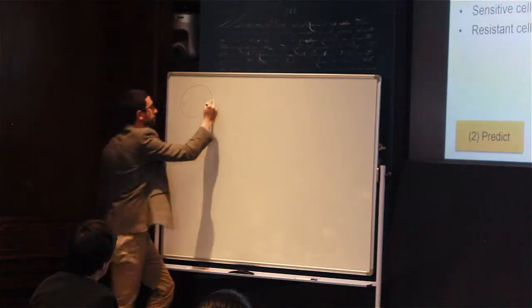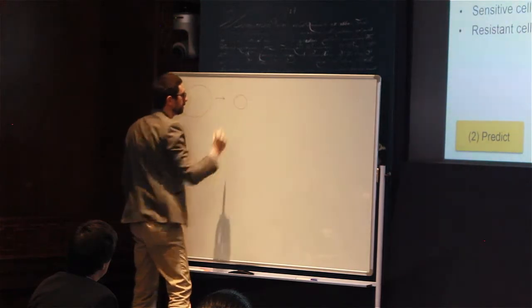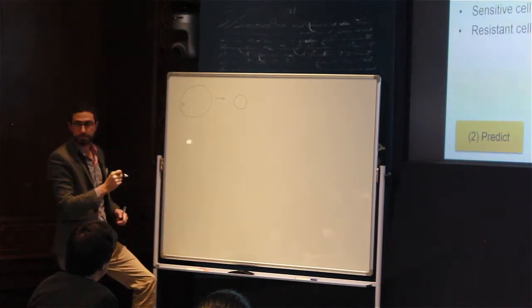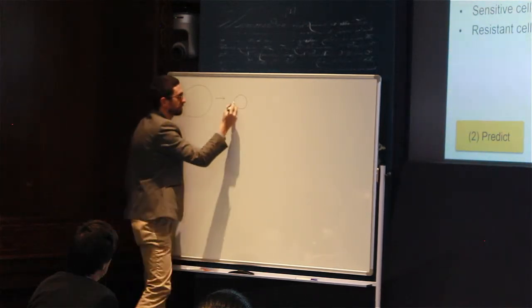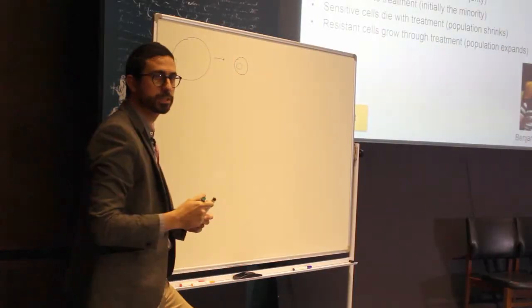As treatment goes along, what we see is the whole population shrinking. Indeed the sensitive cells die. And at the same time though, the resistant cells expand because they are not susceptible to treatment.